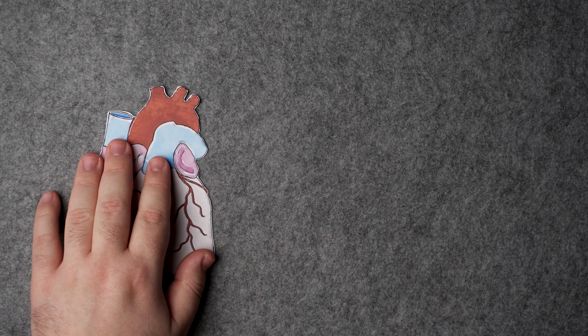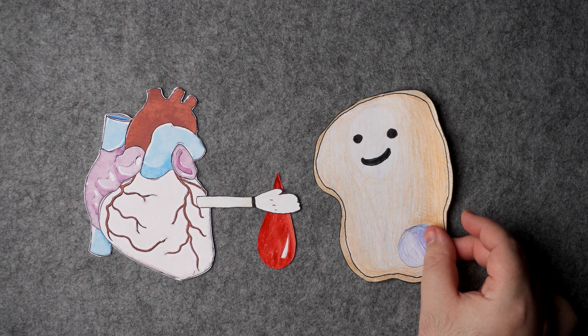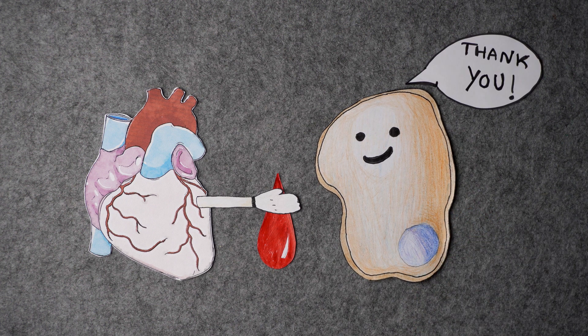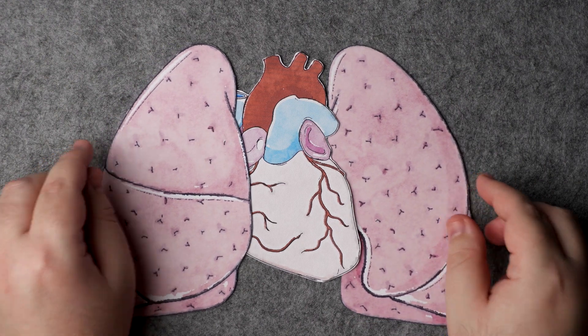Every beat is important to make sure that blood reaches every part of your body. Your cells rely on that. And next to your heart, you have two organs called the lungs.